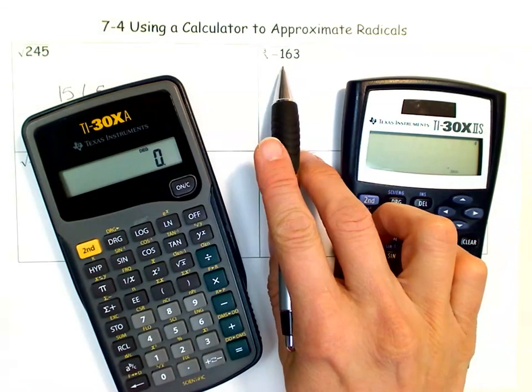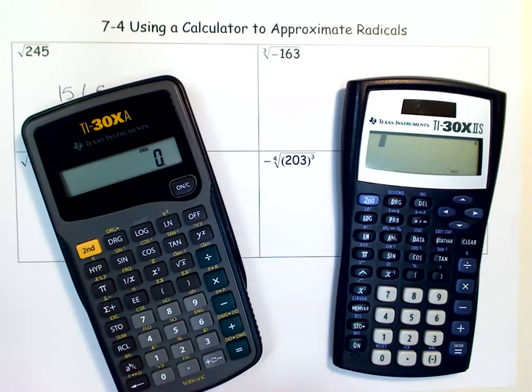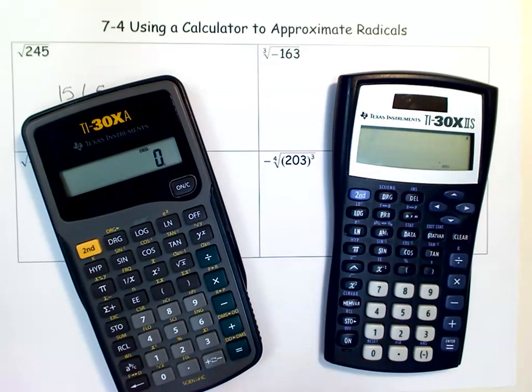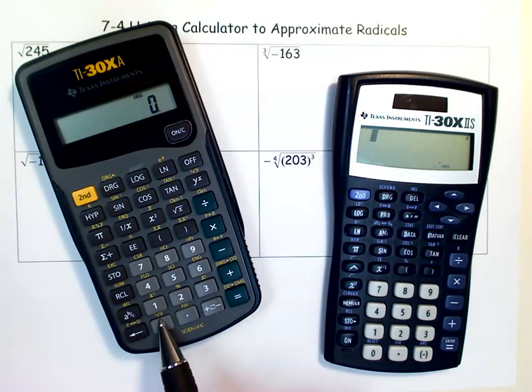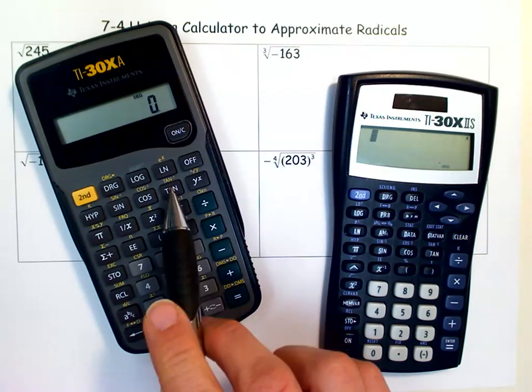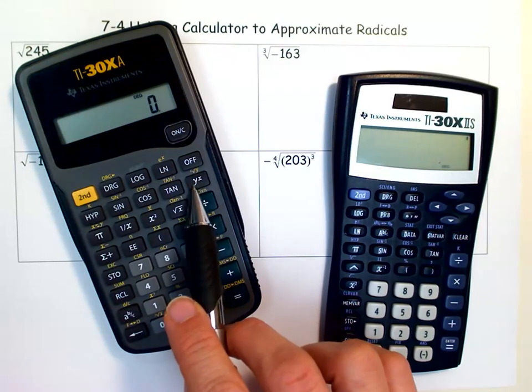Now for the cube root, it gets a little more complicated, that's why I prefer this one. You do have a cube root key down here if you have this model, the second function of the zero. But I've been fooling around with this second function of this key...